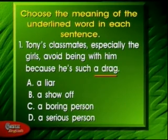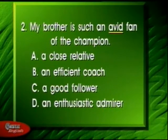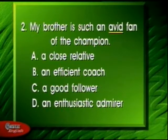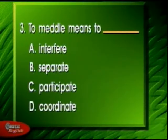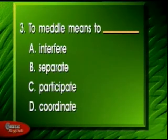The item simply expects the learners to give the meaning outright. Here's another example: My brother is such an avid fan of the champion. A — a close relative, B — an efficient coach, C — a good follower, D — an enthusiastic admirer. You can see that even if the word is used in a sentence, no definite clues are given. Here's another example where there are absolutely no clues given: To meddle means to blank — A — interfere, B — separate, C — participate, D — coordinate.